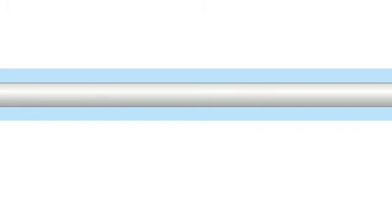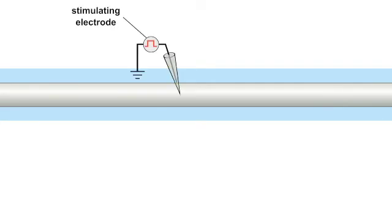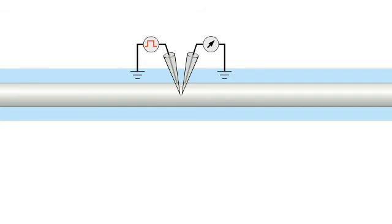In this idealized experiment, a cartoon neuronal fiber in extracellular fluid is used to demonstrate the electrical properties of neurons. A stimulating electrode is inserted into the membrane to inject current, and a second recording electrode is inserted to record the change in membrane potential.